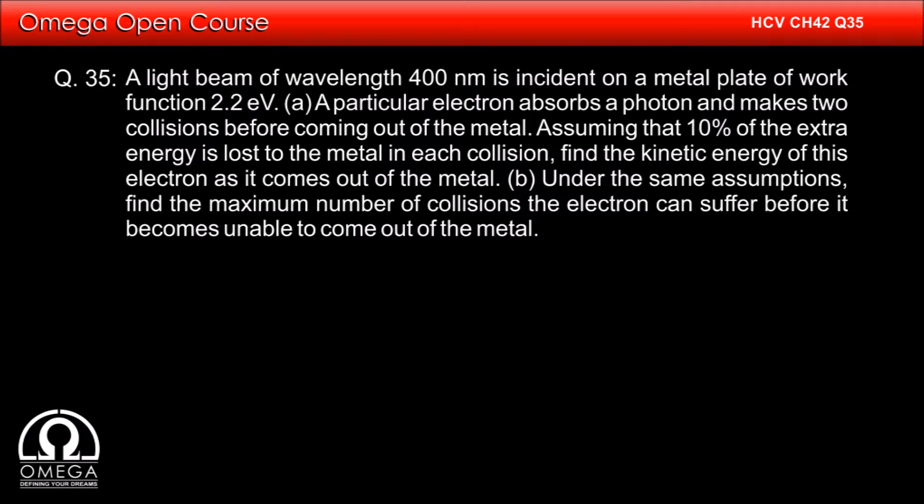A light beam of wavelength 400 nm is incident on a metal plate of work function 2.2 eV. A particular electron absorbs a photon and makes two collisions before coming out of the metal. Assuming that 10% of the extra energy is lost to the metal in each collision,